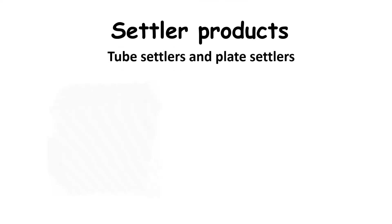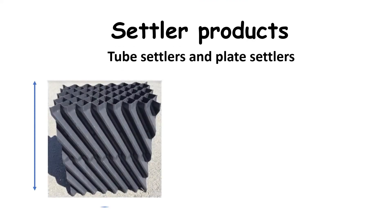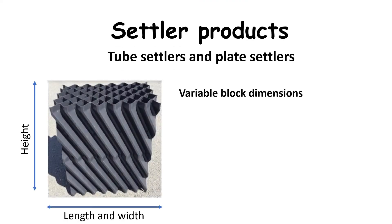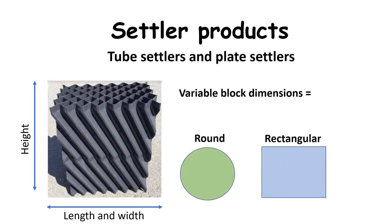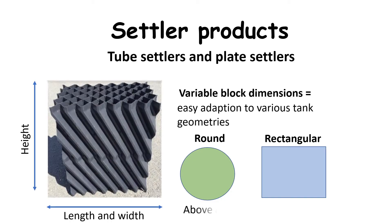Additionally, tube settler block dimensions can be configured to any basin size and geometry, which makes them also suitable for existing covered, underground, or round tanks. In contrast, plate settler modules are usually too large to fit into existing covered or underground tanks, and they cannot be used in most round tanks.